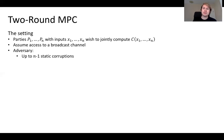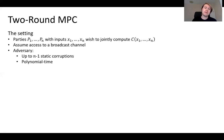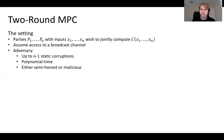We're going to be in the dishonest majority setting, allowing the adversary to corrupt potentially up to all but one of the parties. For this reason, we'll need to rely on computational assumptions, and so we'll restrict our adversary to be polynomial time computable. We'll be considering the standard notions of semi-honest and malicious simulation-based security.